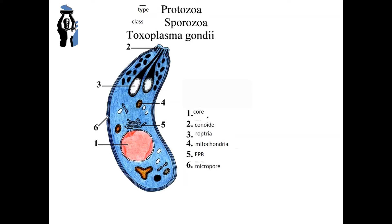The example of Sporozoa is Toxoplasma gondii. The taxonomic classification of this representative is: type Protozoa, class Sporozoa, order Coccida, species Toxoplasma gondii. The morphological features are: Toxoplasma tachyzoites have the shape of an orange lobule, from 4 to 7 microns long.